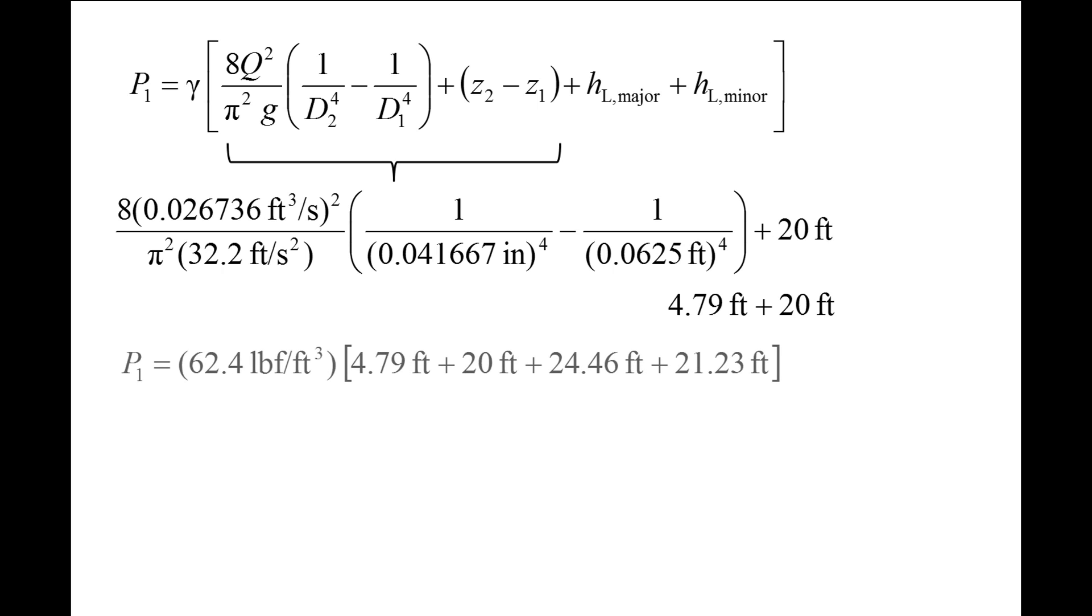We can now calculate the gauge pressure at 1, which is 4,398 pound force per foot squared. Dividing by a factor of 144, we can convert feet squared to inches squared, and the gauge pressure becomes 30.5 psi. This means that the pressure at the inlet to the pipe system needs to be 30.5 psi greater than the atmospheric pressure in order to produce a flow rate of 12 gallons per minute through our pipe system.